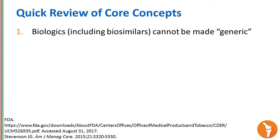Let's commence with a quick review of some core concepts. All of you are very familiar with biologics—drug products from recombinant DNA technology. By definition, they cannot be made generic; they cannot be made a carbon copy. It's because of the complexity of these molecules. Antibodies are huge with primary, secondary, tertiary, and quaternary structural relationships, post-translational modifications. And because these drugs have been around for years and over decades, they have varied over time as there have been refinements in the production process.